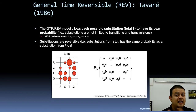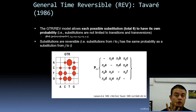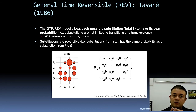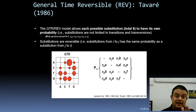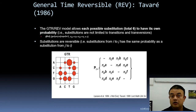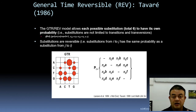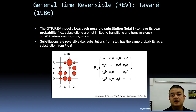There are four nucleotide bases in DNA. Calculating all possible pairwise combinations gives six possible substitution types: A↔T, A↔G, A↔C, C↔T, C↔G, and T↔G. In the GTR model, each of these six substitutions can have its own probability, so substitutions are not merely limited to transition versus transversion categories.